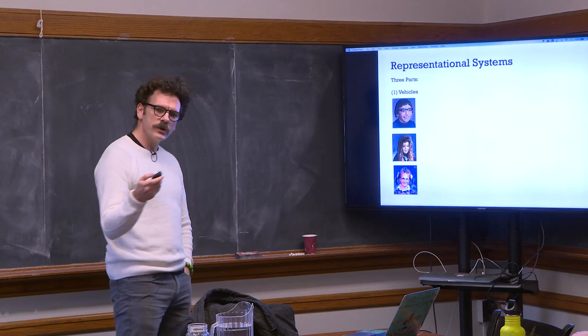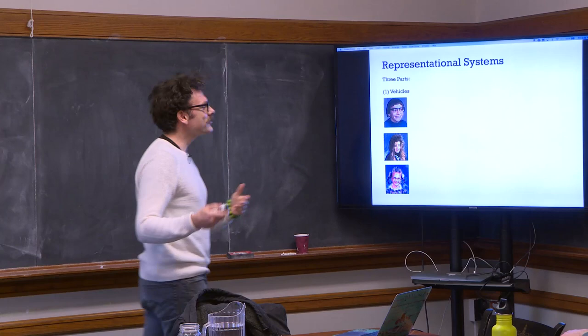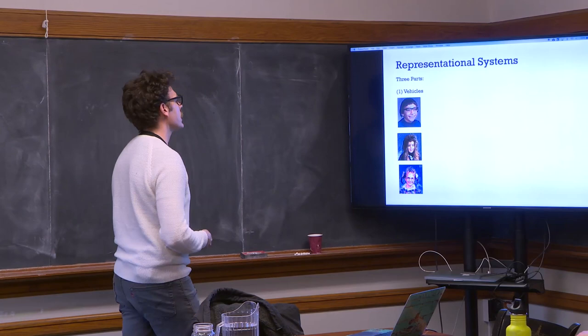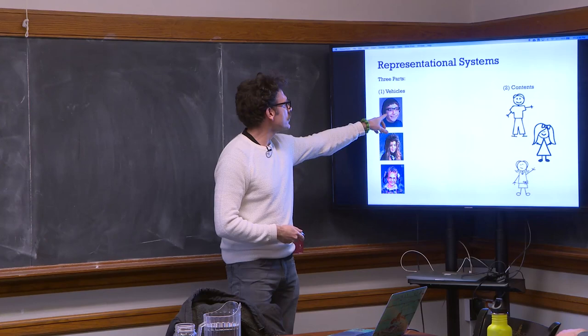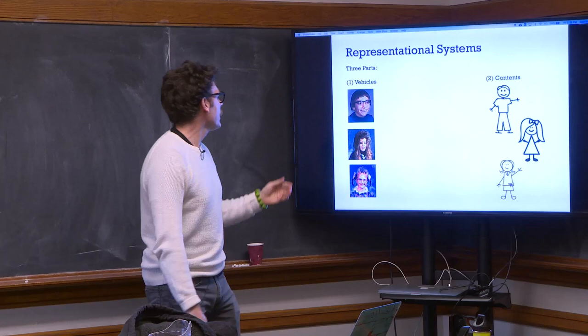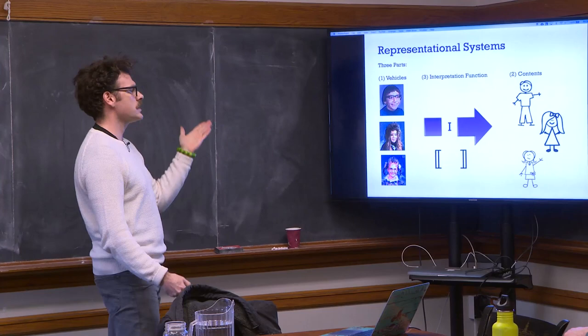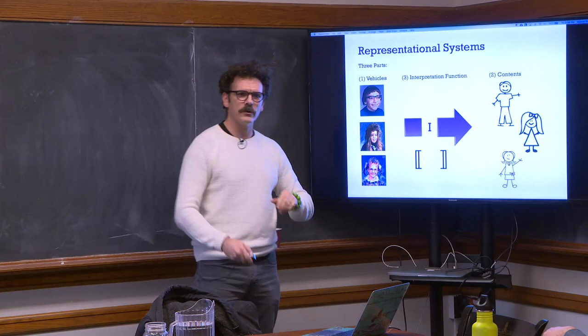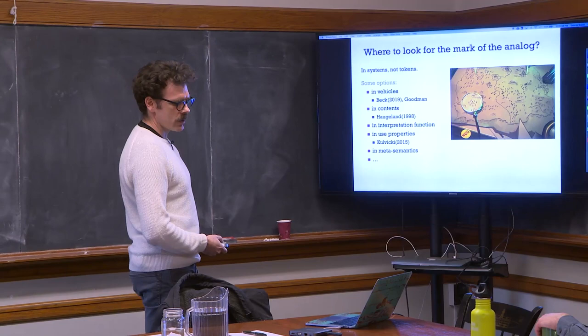When we talk about representational systems in general, there are three parts: the vehicles, the contents, and the interpretation function which takes us from vehicles to contents. As an example, here we have the system of grade school portraiture—an analog representation. The contents are pictures of the adolescent Kulvicki siblings. The interpretation function, often shown with double meaning brackets in philosophy of language or semantics, takes you from vehicles to contents.